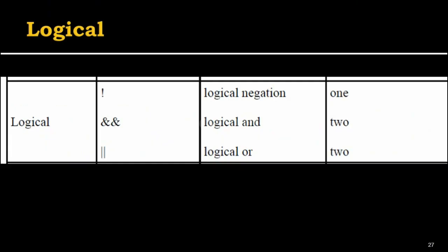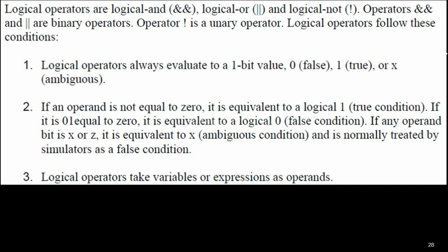Next are the logical operators. There are three logical operators: logical negation (NOT, using !), logical AND (&&), and logical OR (||). You must understand the difference between logical operators and bitwise operators. Logical AND uses &&, logical OR uses ||, and the exclamation mark represents the NOT operation — these are unary and binary operators respectively.